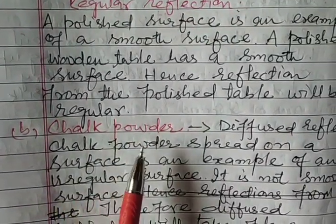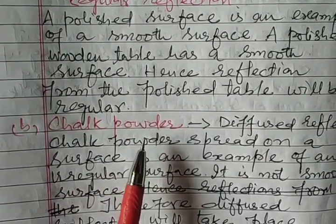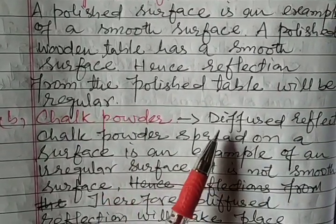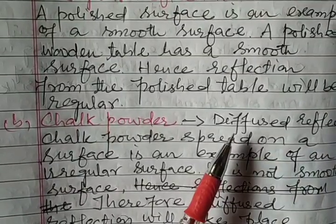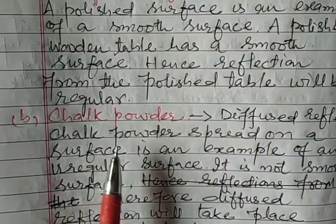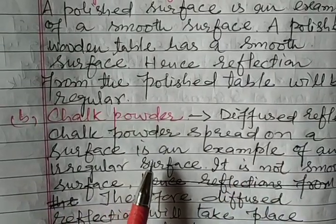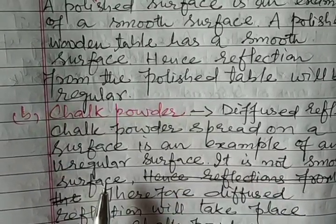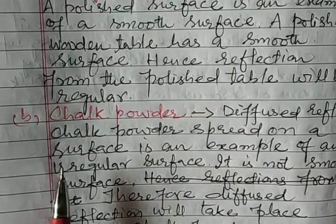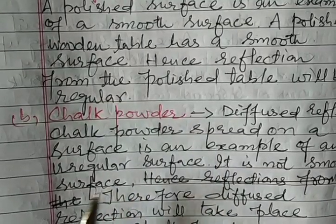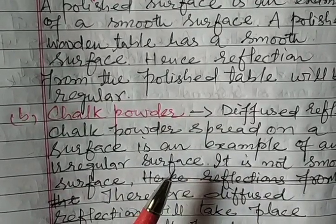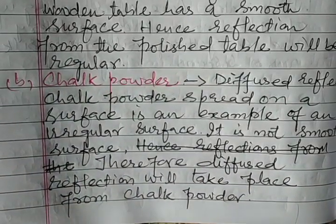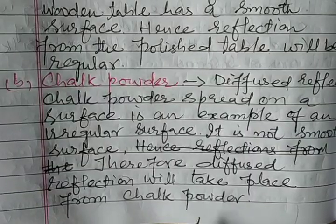Part B: Chalk powder spread on a surface. Chalk powder spread on a surface is an example of an irregular surface. Therefore, diffused reflection will take place.